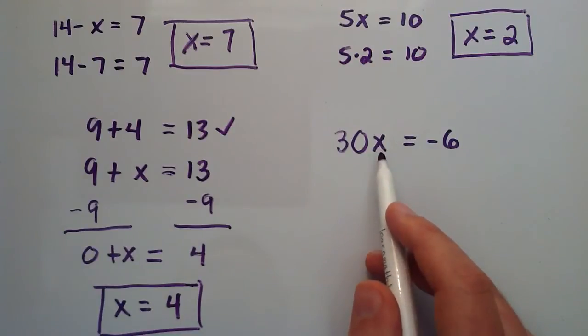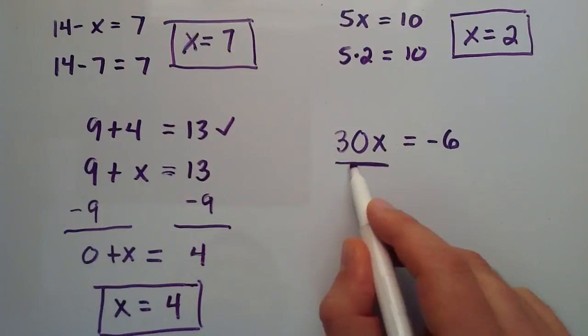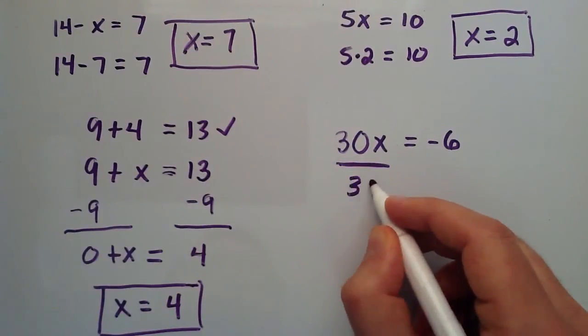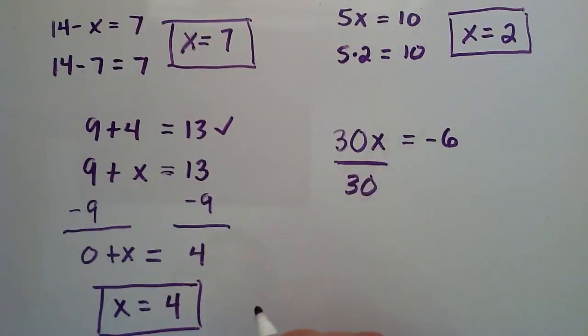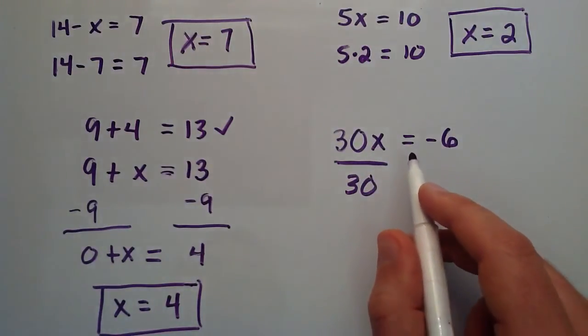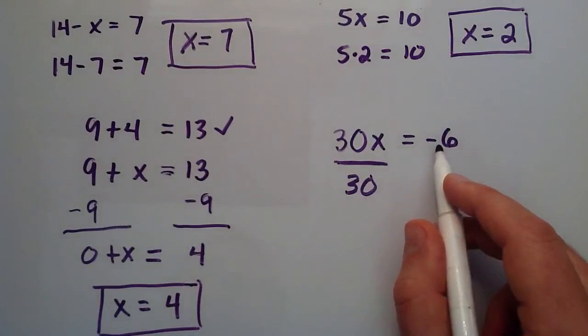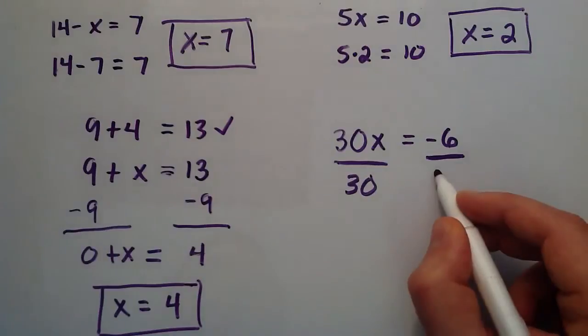We just want to get x by itself now. So, let's go ahead and divide each side by the value 30. Because 30 divided by 30 will give us 1, and 1 times x is simply equal to x. Now, in order for this statement to still be true, we need to divide this side by 30 as well. So, this becomes negative 6 divided by 30.